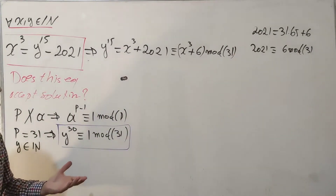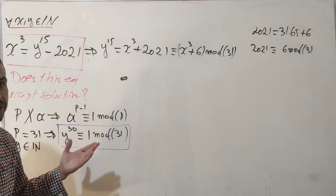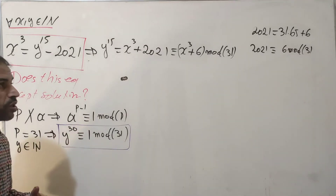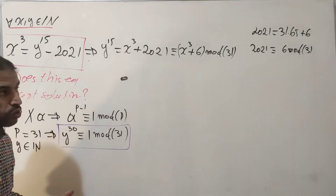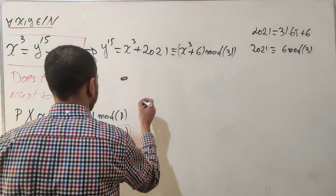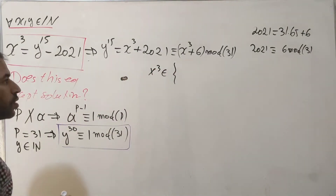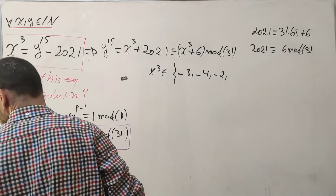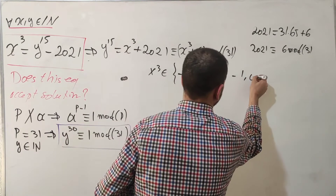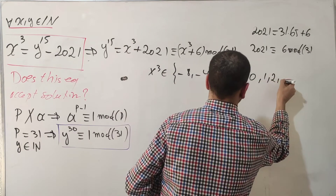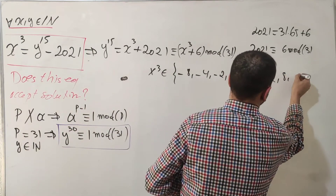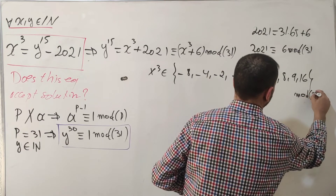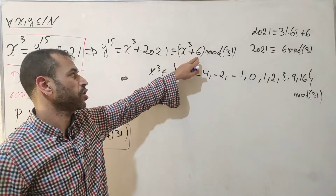Going through the chart — there are a lot of calculations — the possible remainders of x³ mod 31 are: {-8, -4, -2, -1, 0, 1, 2, 8, 9, 16} mod 31.